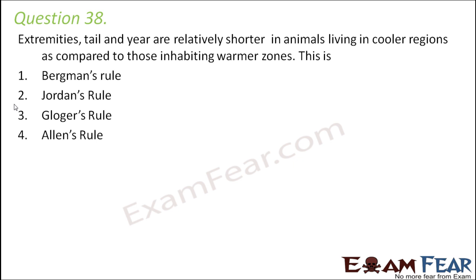Question number 38: extremities, tail, and ear are relatively shorter in animals living in cooler regions as compared to those inhabiting warmer zones. This is whose rule? The rule which says that tail and ears are relatively smaller in size in organisms living in cooler areas was given by Allen. This is called Allen's rule.